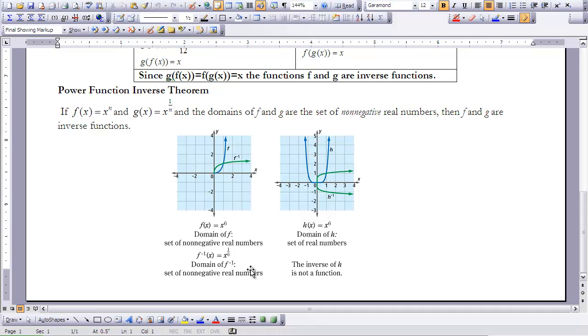So now if we look at h(x) = x^6, and we define h as a set of real numbers, then the inverse of h is not a function, because it would not pass that vertical line test here.